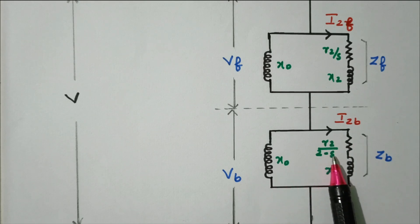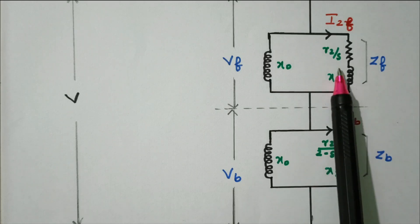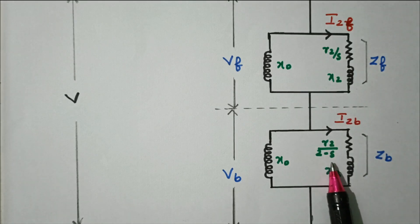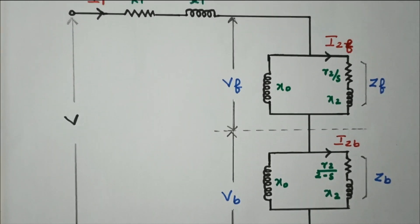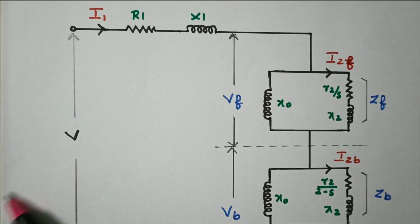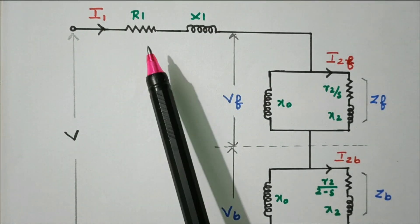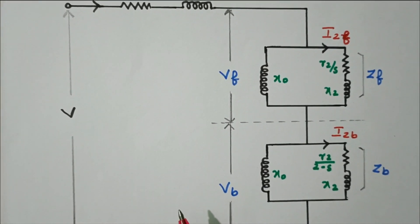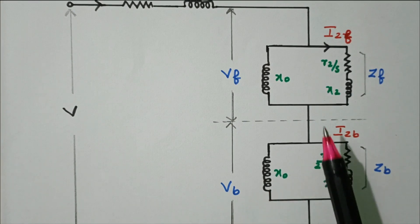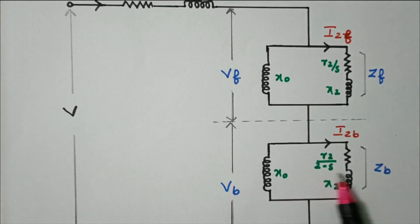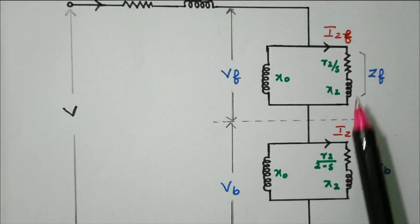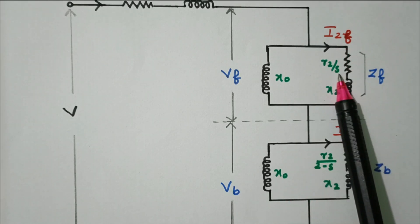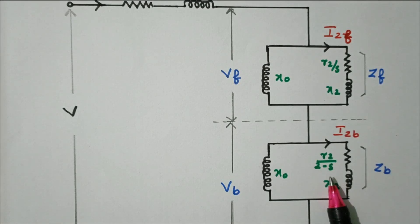For the backward rotor, we refer r2/(2 minus s) and x2. Slip s refers to the forward direction and 2 minus s refers to the reverse direction. So the complete equivalent circuit has: applied voltage, stator current through stator resistance and reactance, then the rotor side with two branches — forward (vf, zf) and backward (vb, zb), with currents i2f and i2b.